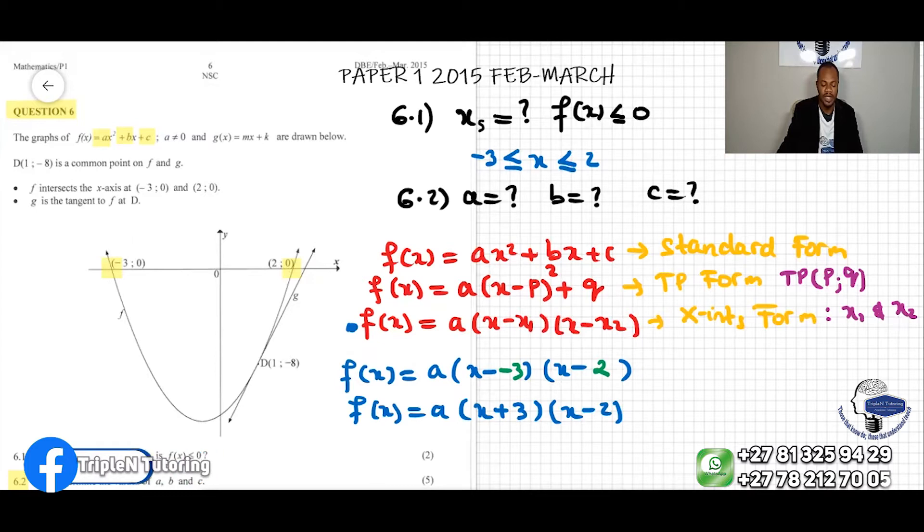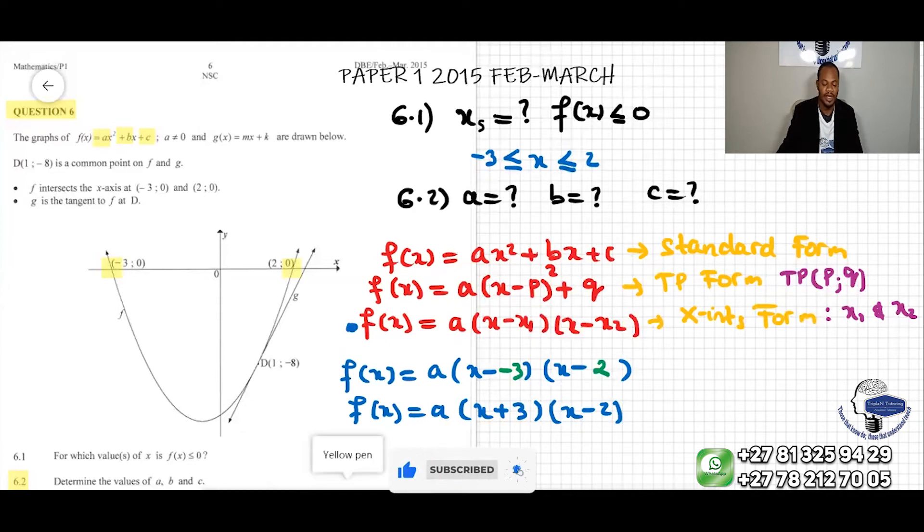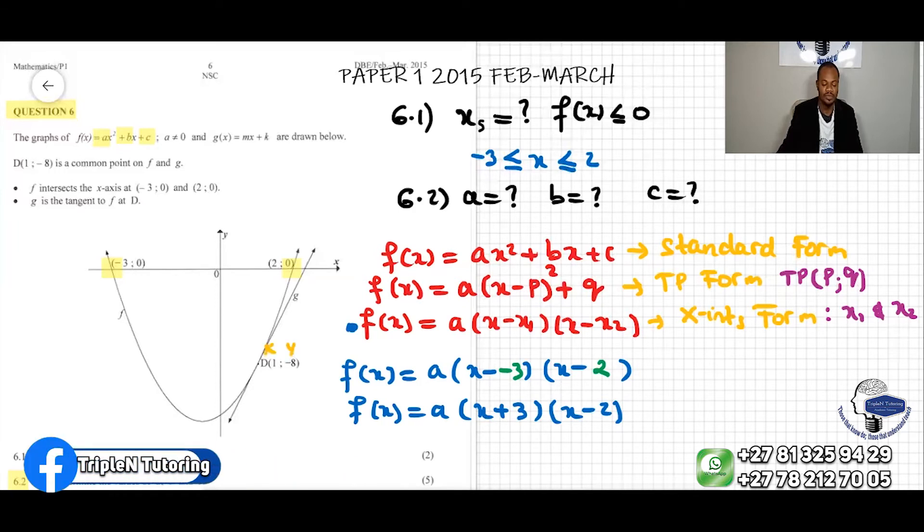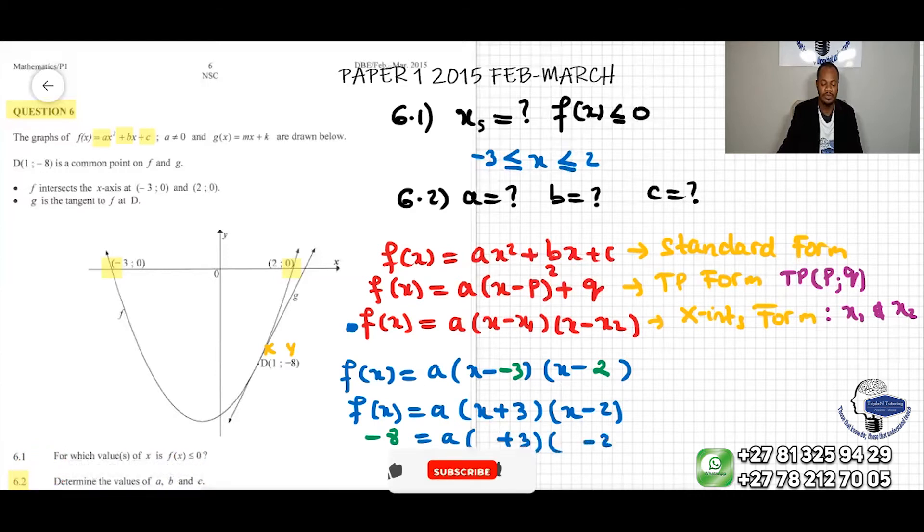We have the point D in the equation. We can sub in the point D. The x-coordinate is 1 and the y-coordinate is -8. So we can sub in here: -8 = a(x + 3)(x - 2). Now we sub in the values of x is 1.